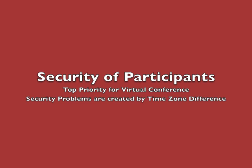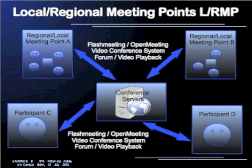We want to highlight the challenges of local and regional meeting points in the context of security. Looking at these meeting points, there might be in one area in India, for example, a regional or local meeting point with four people. There might be in El Salvador a regional meeting point with three people. There might also be isolated participants that don't have the opportunity of local face-to-face communication. Regardless, they can join via conference servers via Flash Meeting, Open Meeting, video conferencing systems, forum, or video playback — and provide feedback and questions to the presenter.